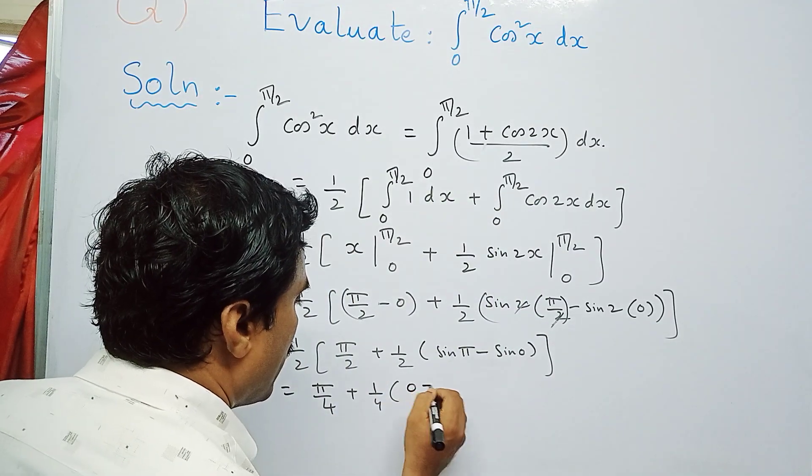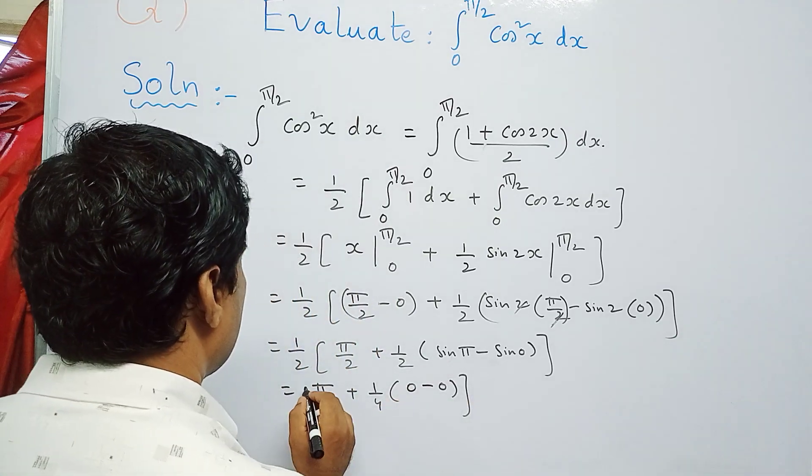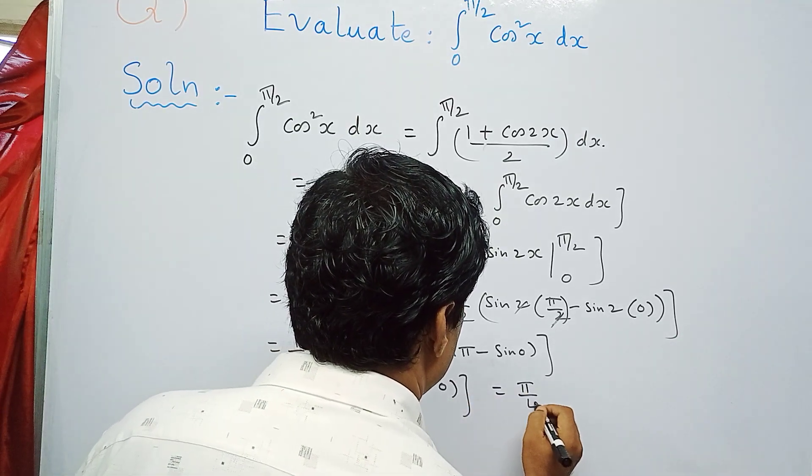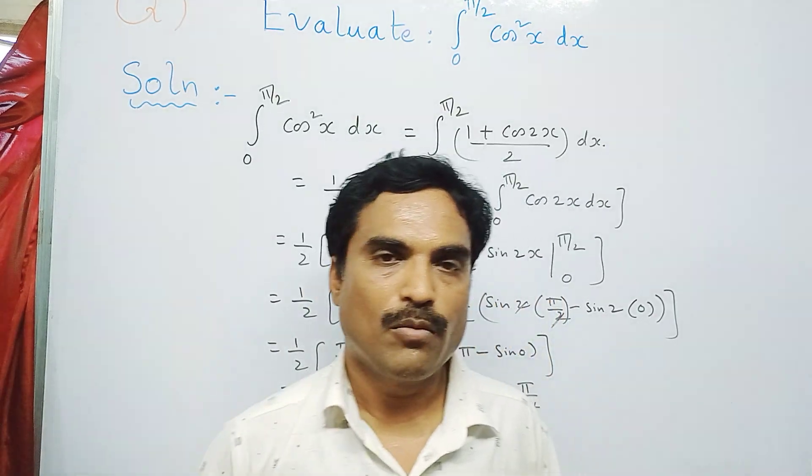So 0 minus 0, you can write this final value. This is equal to, final solution is π/4. So π/4 is the final solution for the above problem.